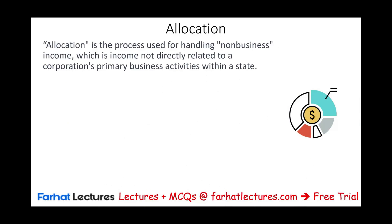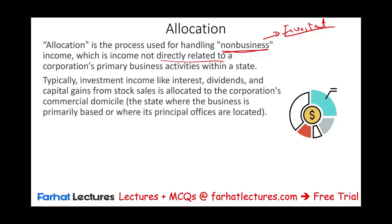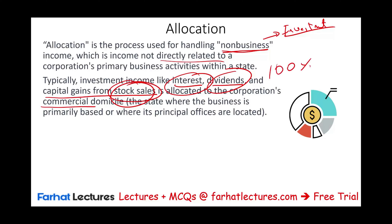Allocation is the process of handling non-business income — that is, investment income not directly related to the corporation's main activity. Typically, investment income like interest, dividends, and capital gains from stocks are allocated 100% to the company's commercial domicile — where the headquarter or home company is located. A company could be operating in many states, but there is only one home state.